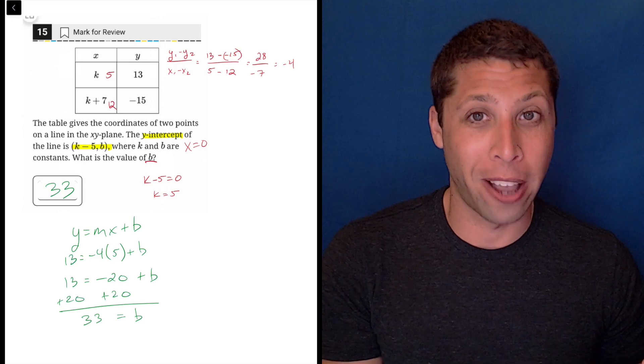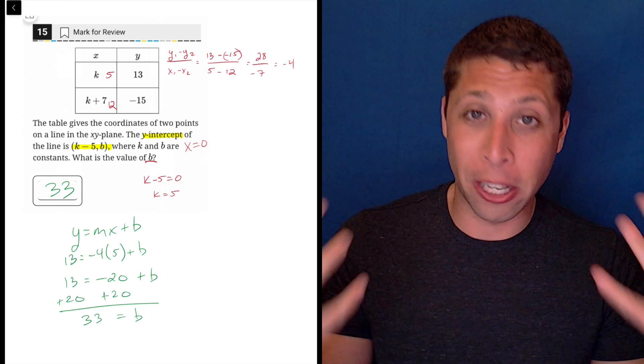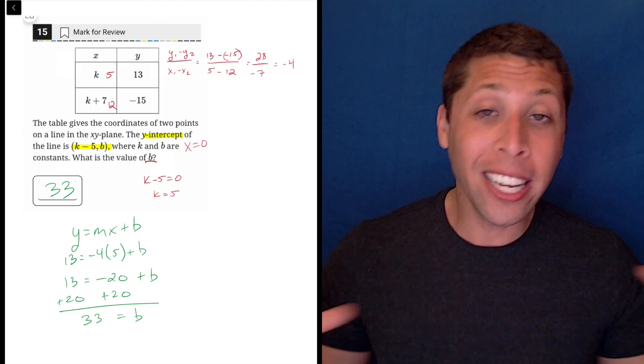They're asking for the y-intercept. And what do we know about every y-intercept? Well x is equal to 0. How do we find slope? We take two points and we use this formula to subtract them. So we solve that.